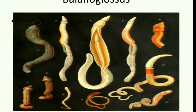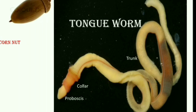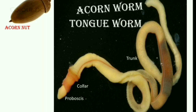Balanoglossus is commonly named as 'tongue worm' and also 'acorn worm.' It is called acorn worm because its collar and proboscis together resemble the shape of an acorn nut — the nut of an oak tree. Since its proboscis and collar resemble a corn nut, that is why its common name is acorn worm.